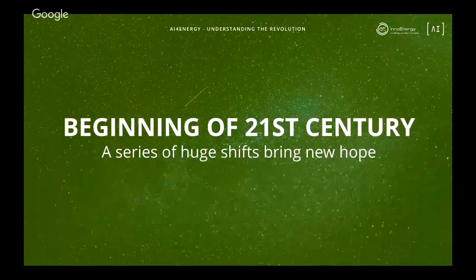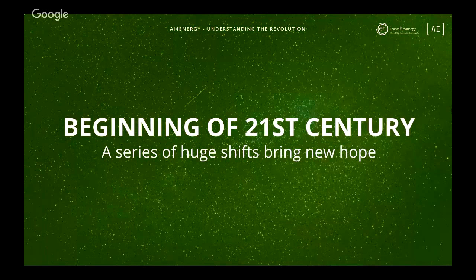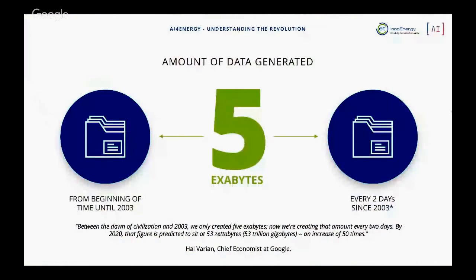In the beginning of the 21st century, a series of huge shifts happened and we started to have new hope for artificial intelligence. First, thanks to the internet, we started generating a lot of data. Hal Varian, the chief economist at Google, estimated that from the beginning of time until 2003, we produced five exabytes of data — five billion gigabytes. Nowadays, we're producing that same amount every two days. Everything we produced from the beginning of time until 2003, we now do in two days — a crazy acceleration in data generation.